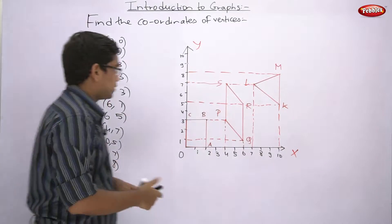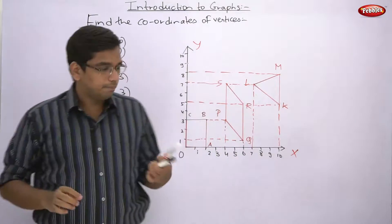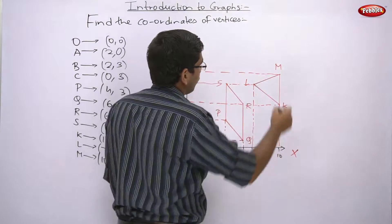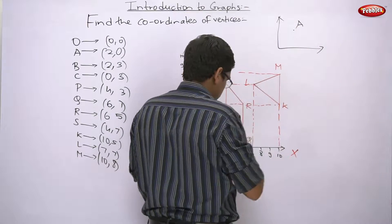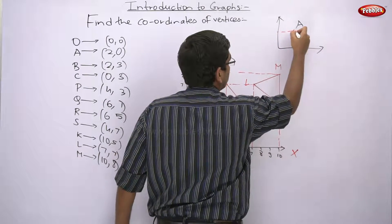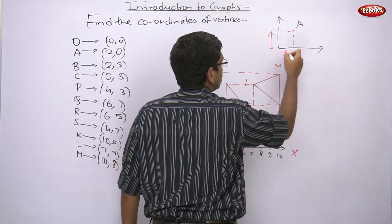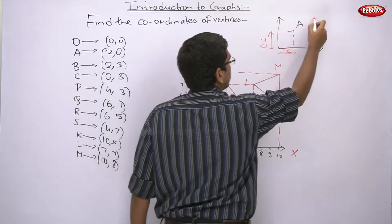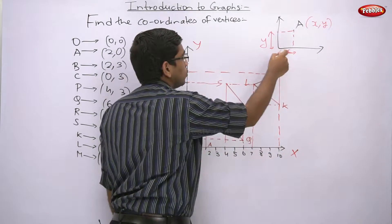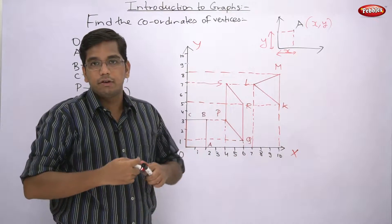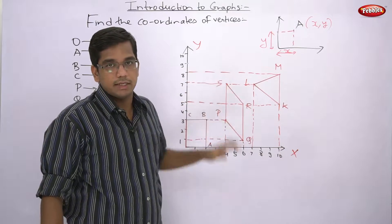This is your final answer — all these coordinates of the vertices. The basic rule is: if you have to find coordinates of any point A, draw a horizontal dotted line and a vertical dotted line from A. Where the vertical line meets the x-axis gives your x-coordinate, and where the horizontal line meets the y-axis gives your y-coordinate. That's it — that's the fundamental concept. You can find coordinates of any point in the first quadrant this way.